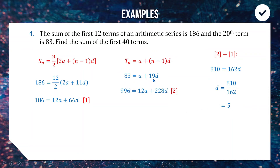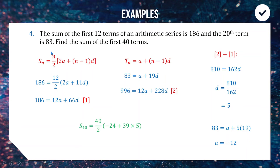Substituting d = 5 into the equation 83 = a + 19d: 83 = a + 95, so a = −12. Now with a = −12 and d = 5, we use the sum formula to find the sum of the first 40 terms, giving a final answer of 3420. This would be at least a three-mark question in an assessment.